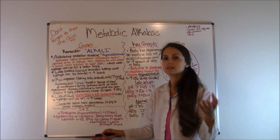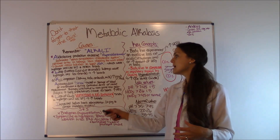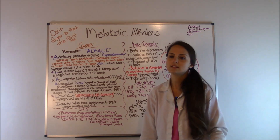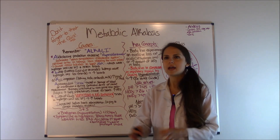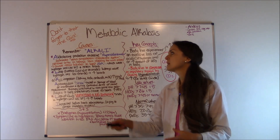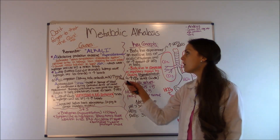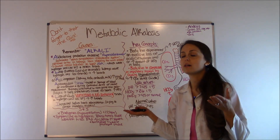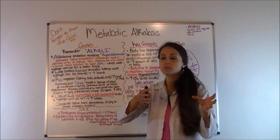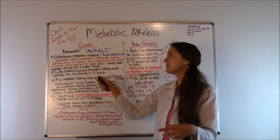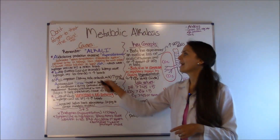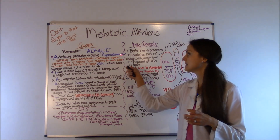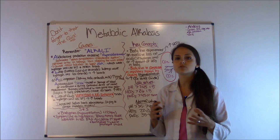Now let's look at the causes. To remember them, use the mnemonic ALKALI — since we're in alkalosis. The A stands for excessive aldosterone production, as in the condition hyperaldosteronism. The renin-angiotensin-aldosterone system is activated, and the adrenal cortex releases excess aldosterone, which causes renal tubules to retain sodium while losing hydrogen ions and potassium. When hydrogen ions leave, bicarb increases.